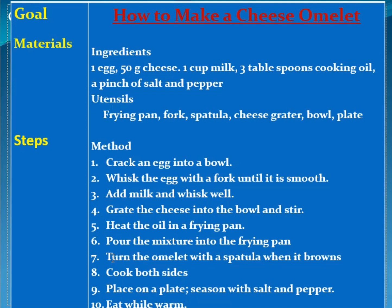Turn the omelette with a spatula when it browns — dibalik omelette-nya dengan spatula sampai menjadi kecoklatan. Cook both sides — harus dibalik ke dua sisi. And place on a plate seasoned with salt and pepper — tahap akhir untuk rasanya ditambah salt and pepper.